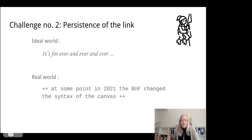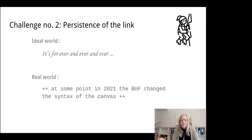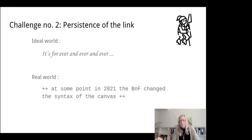Challenge two: somewhat naively, I thought manifests were persistent and that a link to a canvas would be more or less permanent. It turned out that's not the case — two weeks ago, when preparing this presentation, we found that at some point in 2021 the BnF appears to have changed the syntax of the canvas IDs, so our links are currently broken. Repairing this isn't enormous work, but it's certainly something to consider for future prospects.